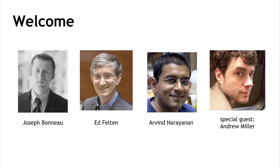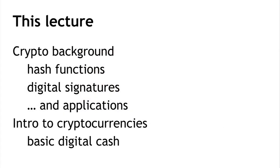In this lecture, number one, we're going to do two things. First, we'll introduce some cryptographic primitives that are necessary for talking about cryptocurrencies — in particular, cryptographic hashes and digital signatures — and talk about some of the ways those are used to build cryptocurrencies. Then at the end of the lecture, we'll start talking about cryptocurrencies and give examples of simple cryptocurrencies that illustrate some of the design challenges we need to deal with.